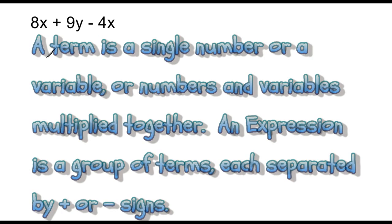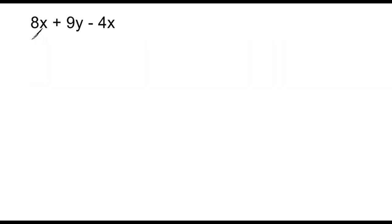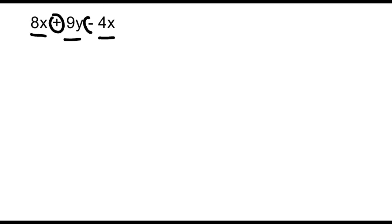For example, the expression shown on the screen has three terms. The first term is 8x, the second term is 9y, and the third term is 4x. And as you can see, each one of these three terms is separated by a plus and a minus sign.